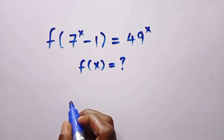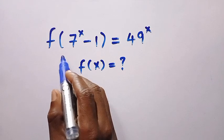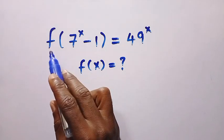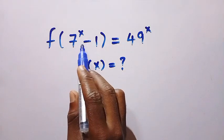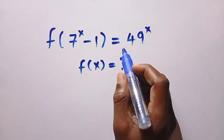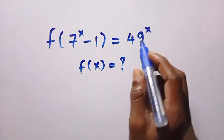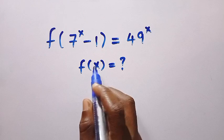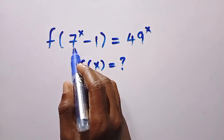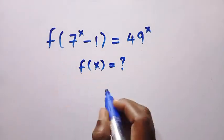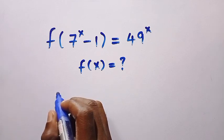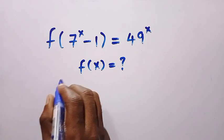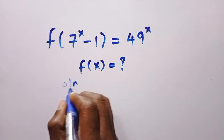Good day, viewers. You are welcome. How to solve this nice functional equation problem? We have f of 7 to the power x minus 1 equals 49 to the power of x. I will be interested to find only f of x when we have the exponent as the domain of this function. So I will be solving this problem in two different ways.